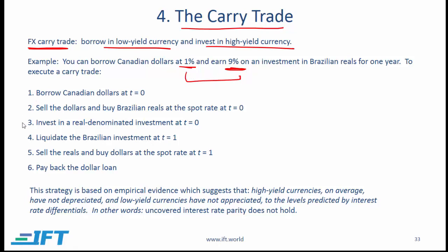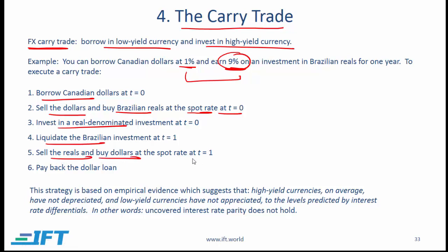Specifically, the transactions are as follows. We borrow the low yield currency, which in this case is Canadian dollars. We sell the Canadian dollars and buy the Brazilian currency at the spot rate at time 0. We then invest in the high yield currency, the Brazilian real, at 9%. One year later, we liquidate the investment — we sell the real and buy dollars at the spot rate at t equals 1 — and then we pay back the dollar loan. As long as spot rates have not changed, we will make a profit based on this differential.